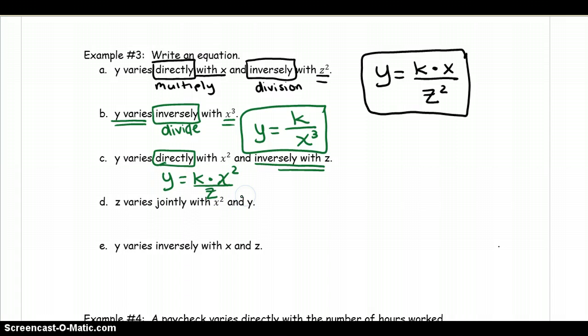We have z varies jointly. So z equals jointly. This is very similar to directly. And since it is, it's multiply. So we have a k, a constant value, and it's going to be multiplied by x squared and y. So both of them are a jointly relationship. That means that they're being multiplied.